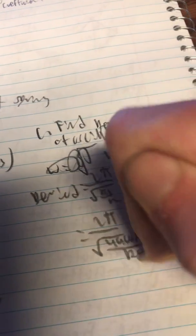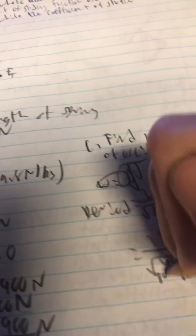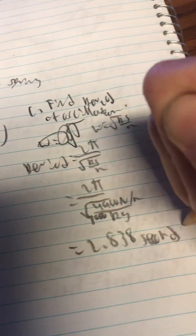Yeah, that will be 2π over the square root of 4900 newtons per meter over 1000 kilograms. And that will be 2.838 seconds per cycle.